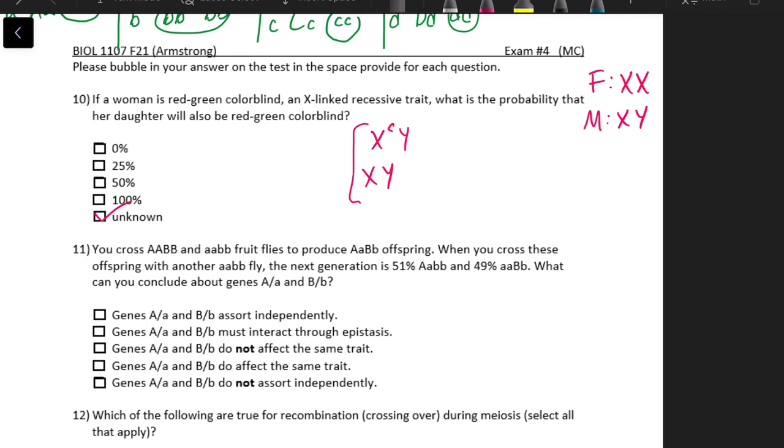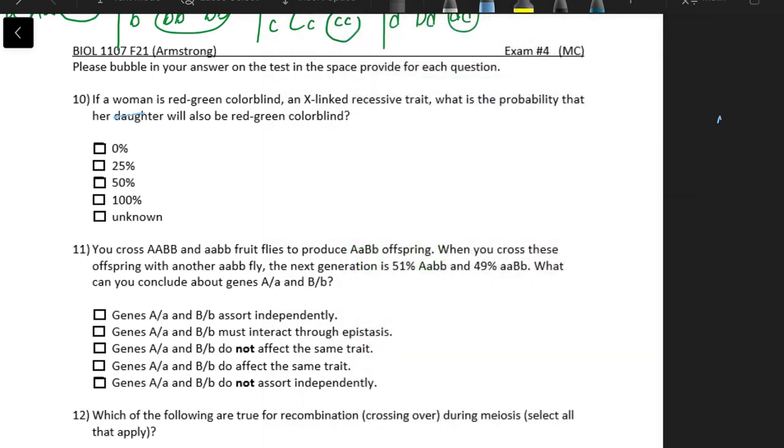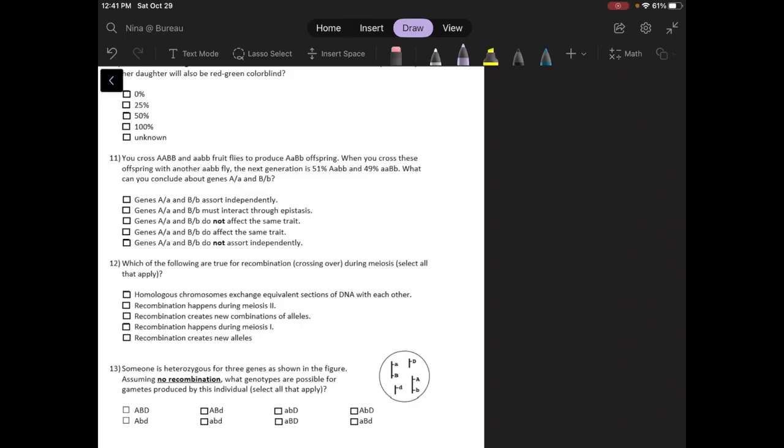I'm just going to go a step further and explain a different scenario. So let's say the question was actually asking us, what is the probability that the son will be colorblind? So we know the mom, again, XCXC. And because males are always XY, they will always inherit their Y chromosome from dad and their X chromosome from mom. Mom has two X chromosomes that have that trait. So no matter what, the son will be colorblind. So if this question asked, what is the probability that the son will be red-green colorblind, it would be 100% the son will be colorblind.